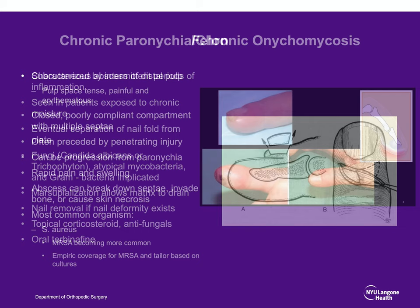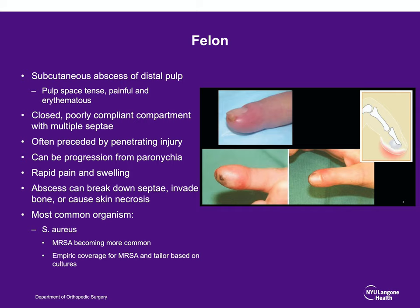Next, a felon is a subcutaneous abscess involving the pulp space. This is a poorly compliant compartment with multiple septa. It often has a preceding penetrating trauma, and if left untreated, it can invade the bone, cause skin necrosis, or invade the flexor tendon sheath. Staph aureus is the most common, with MRSA becoming much more common. Therefore, when treating this, you should start coverage with a broad-spectrum antibiotic to cover for MRSA, such as Bactrim, and then tailor based on sensitivities.